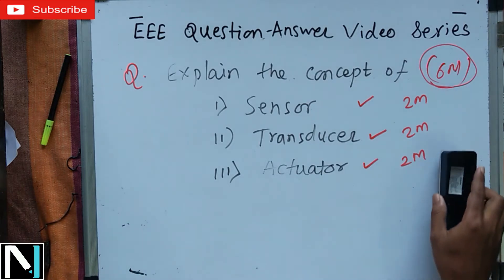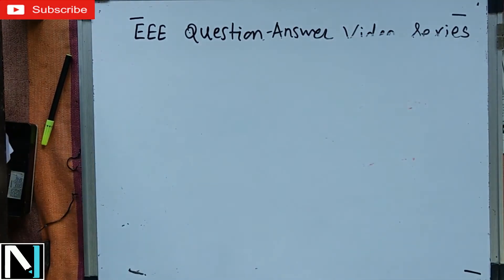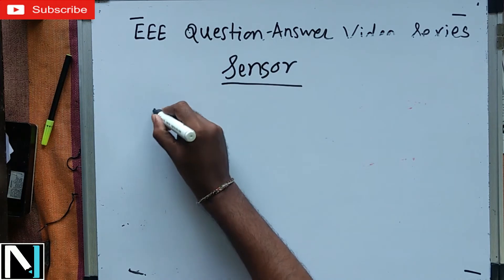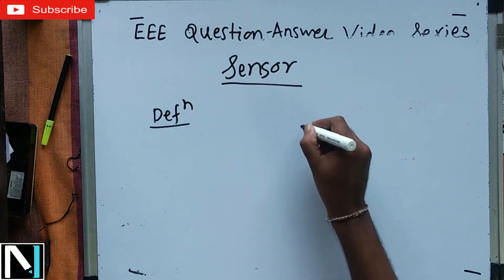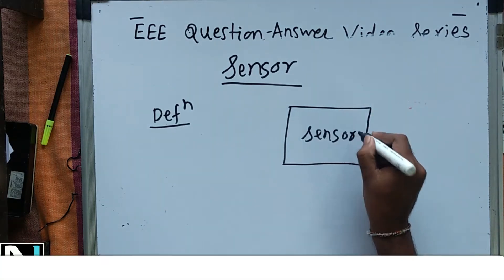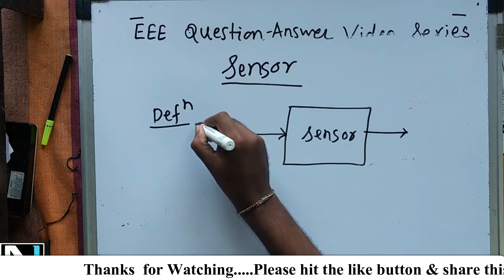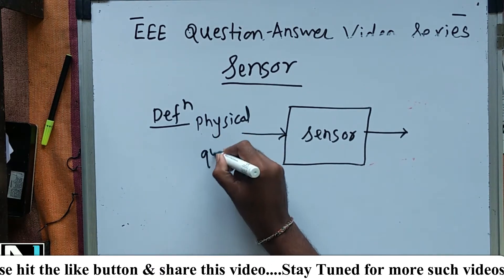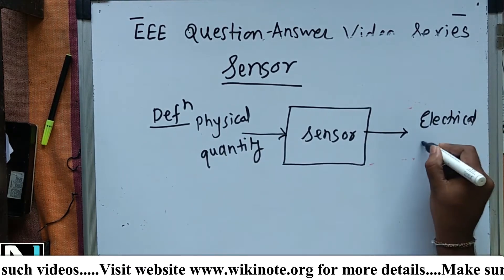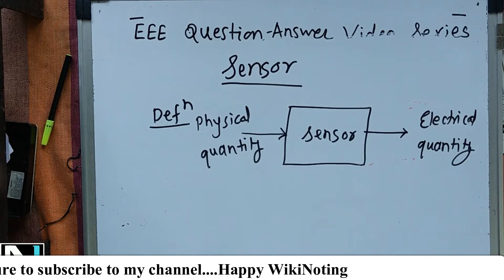Let's start with sensor first. What do you mean by sensor? It is expected that you write down the definition of the sensor. I will explain the definition of sensor along with the diagram. The role of a sensor is to convert the physical quantity into the electrical quantity.